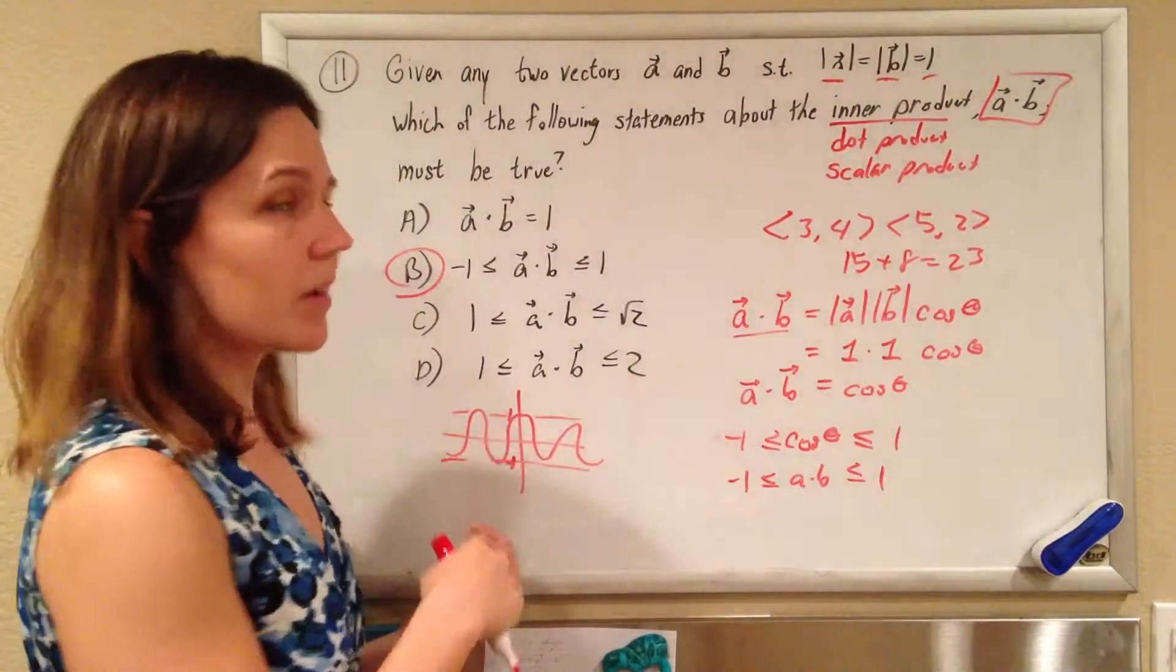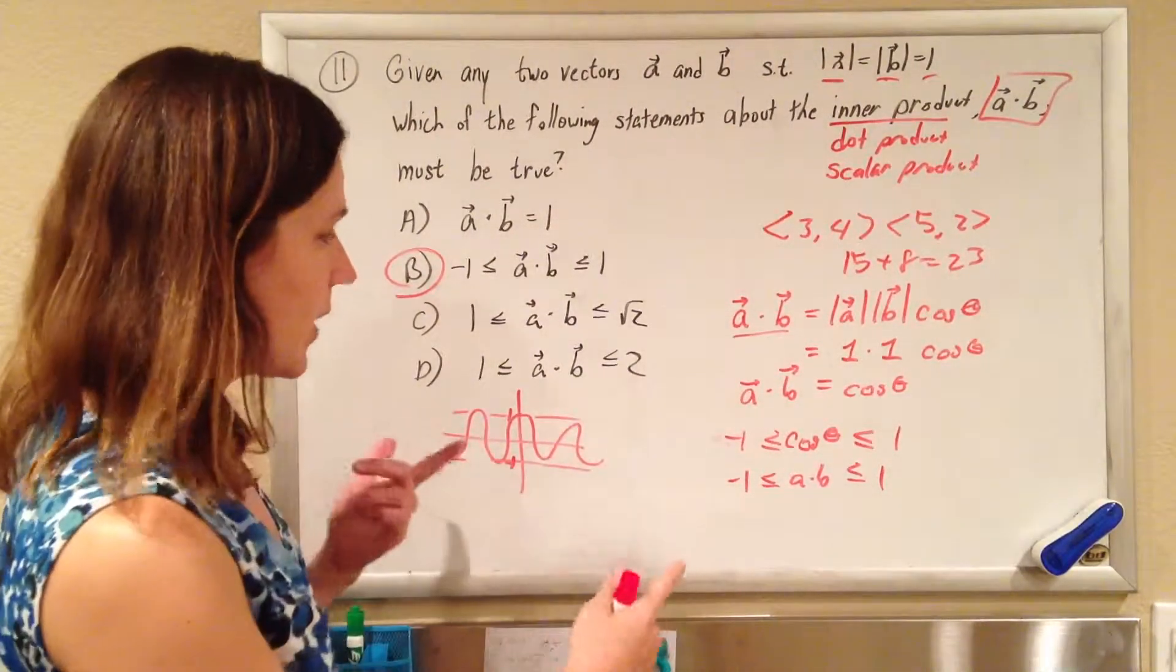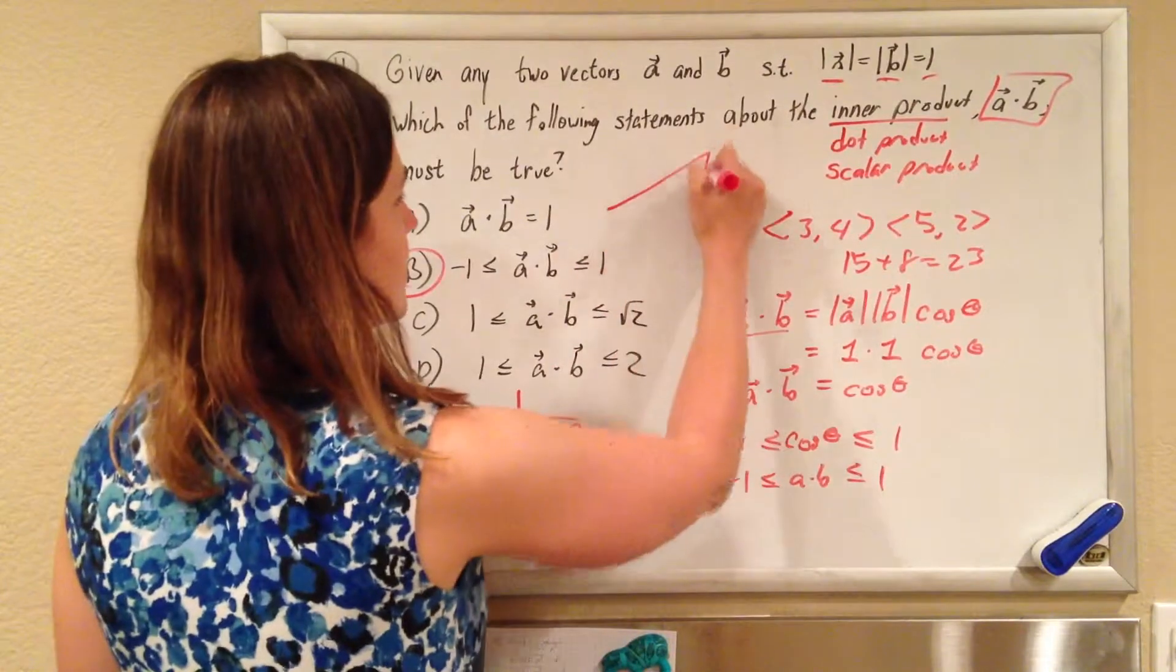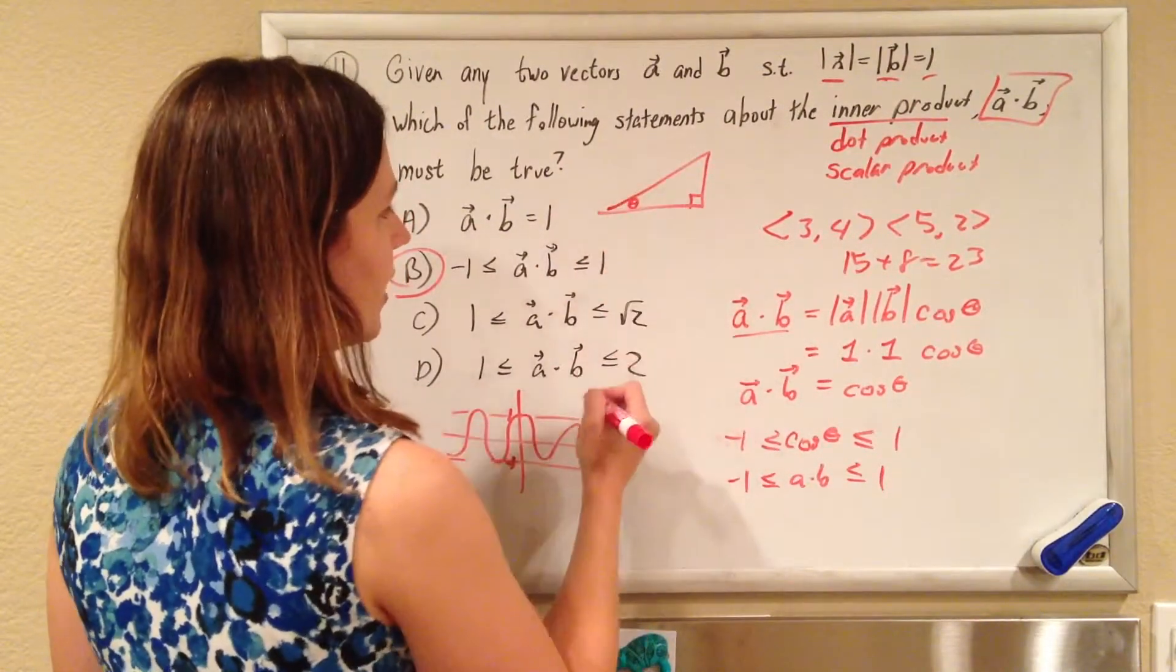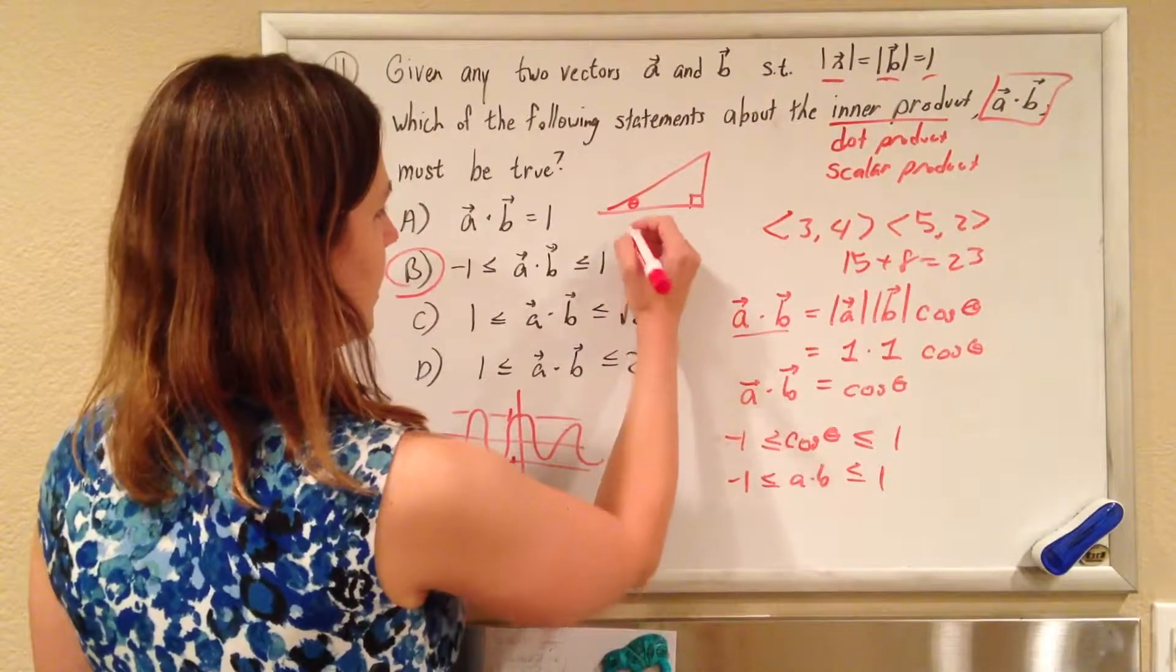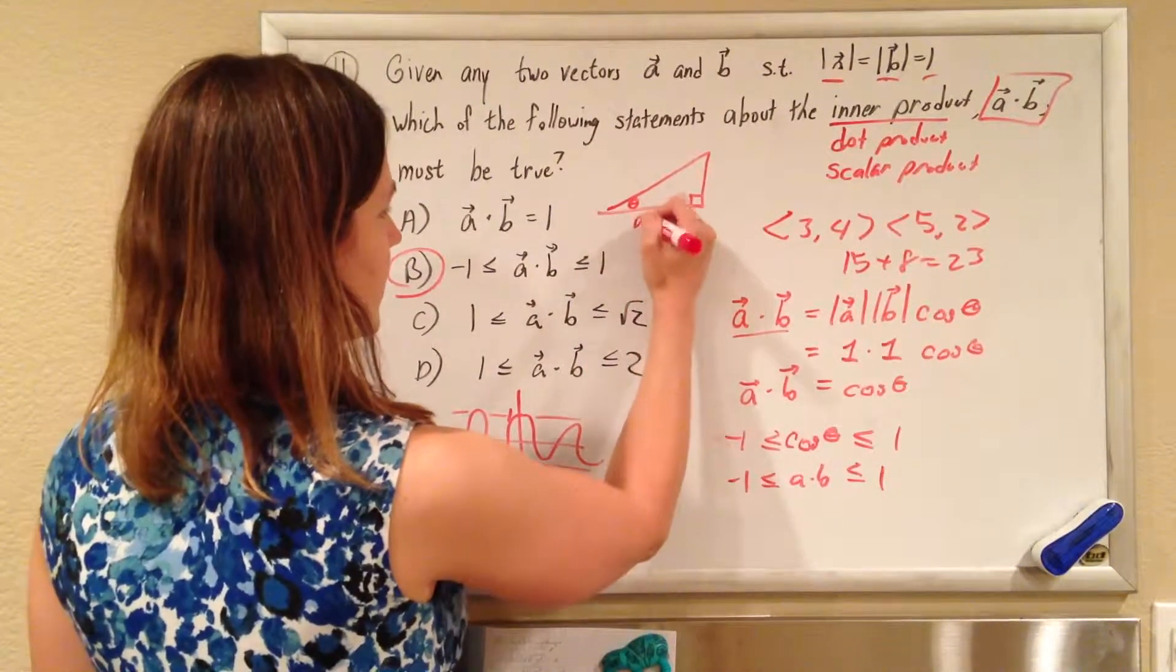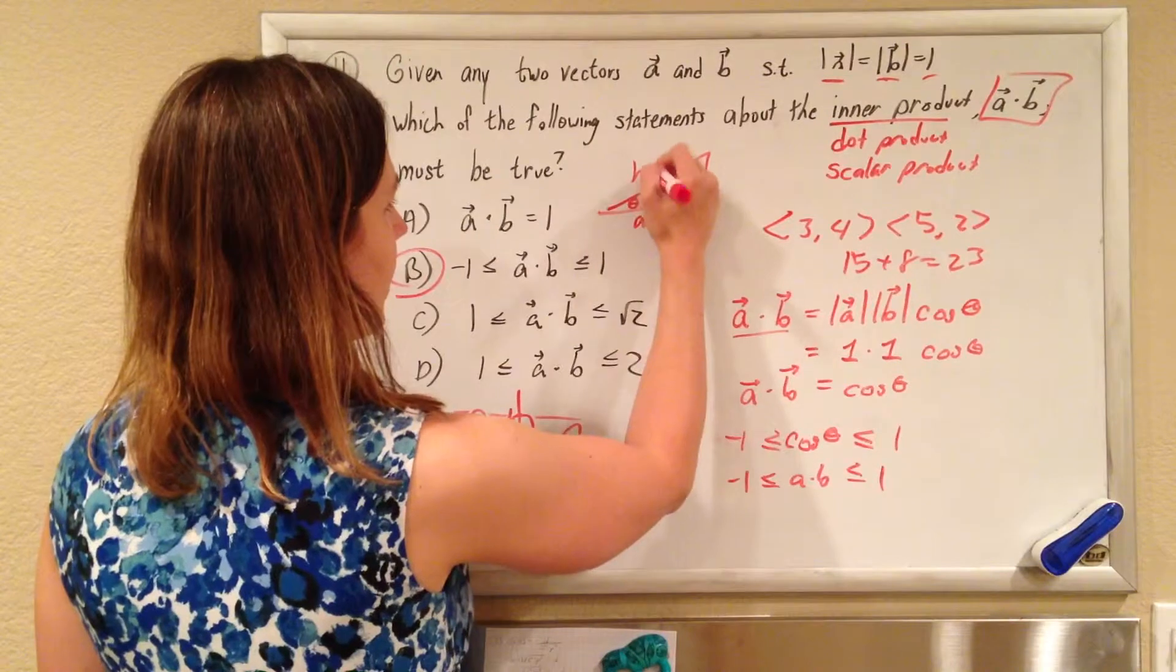Now, if you're like, wait a second, trig is not on this test, how am I supposed to know that? There's enough that you're supposed to know SOHCAHTOA rules. So if we put theta there, and recognize we have a right triangle, and the cosine is the adjacent length over the hypotenuse.